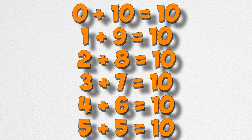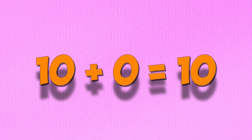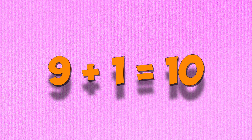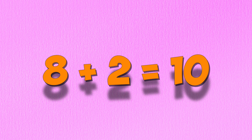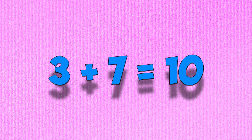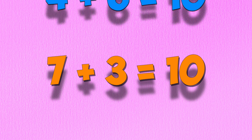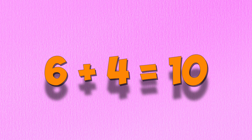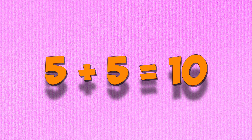Let's sing them again! And they sang: 0 plus 10 is 10, and 10 plus 0 is 10. 1 plus 9 is 10, and 9 plus 1 is 10. 2 plus 8 is 10, and 8 plus 2 is 10. 3 plus 7 is 10, and 7 plus 3 is 10. 4 plus 6 is 10, and 6 plus 4 is 10. 5 plus 5 is 10, and 5 plus 5, that's 10!